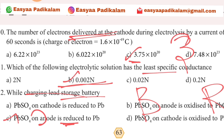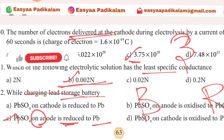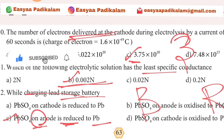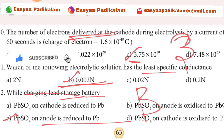Anode A, P, B. If you use alphabet A, P, B — PbSO₄ on the anode is reduced to Pb. So the answer is red.